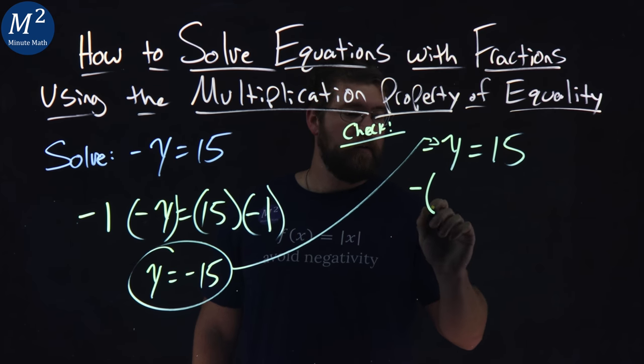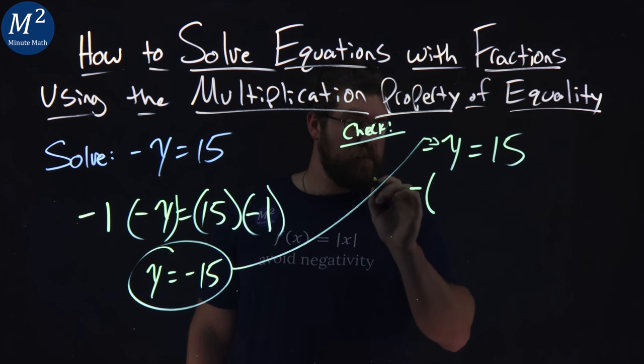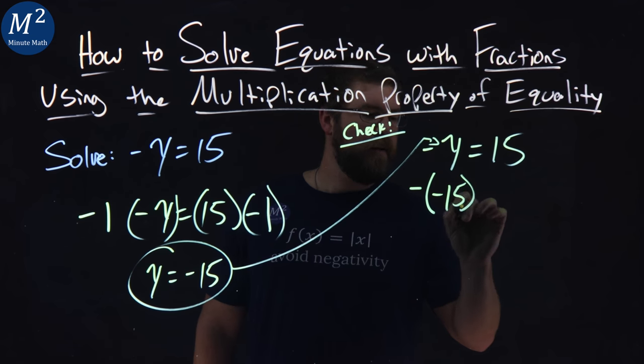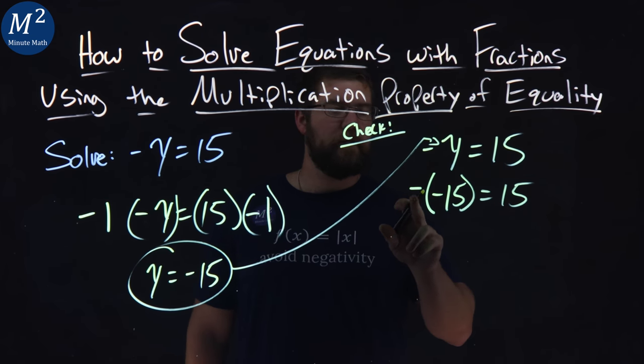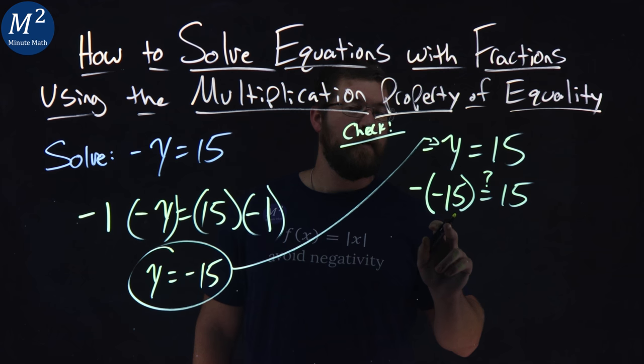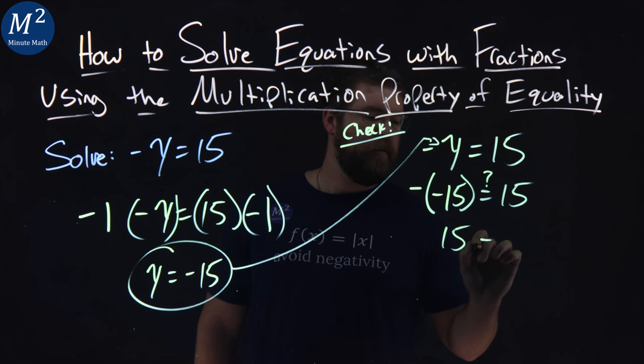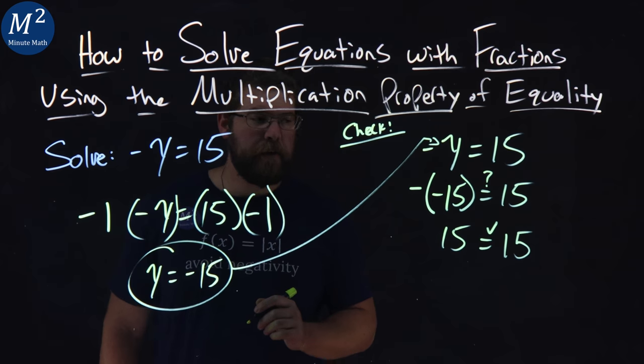Negative stays on the outside. We're plugging in. Keep your negatives in line. Negative 15 in is positive 15. Negative times a negative is a positive. Positive 15 is equal to positive 15. A pretty simple check here.